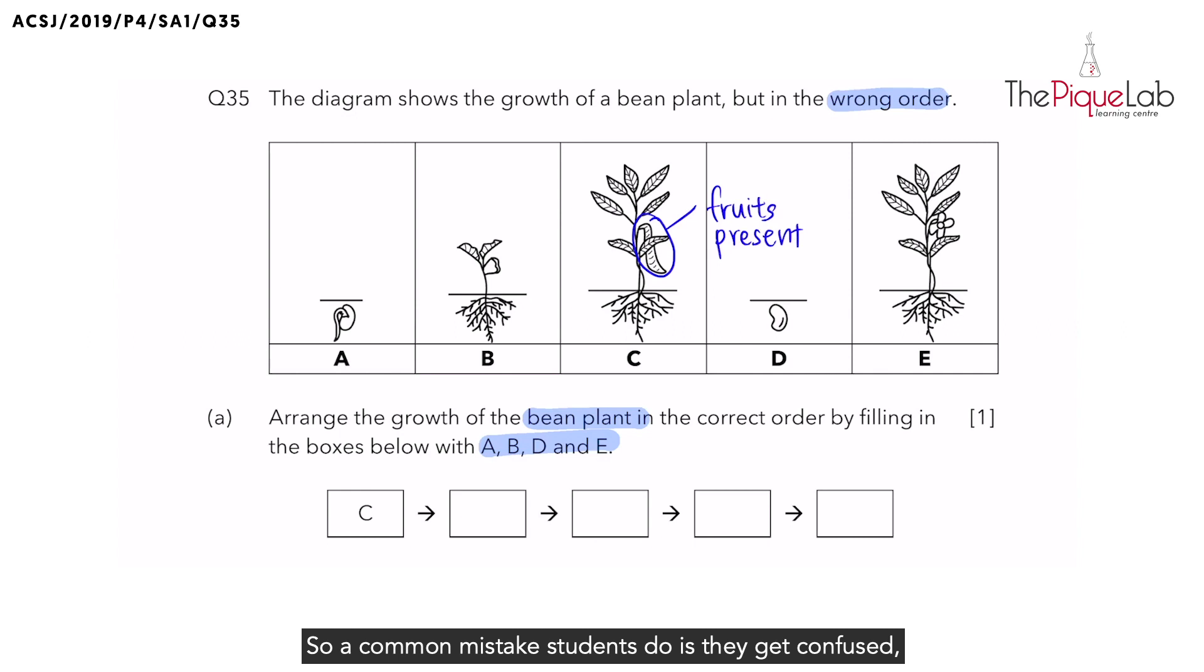So a common mistake students do is they get confused and then the answer they give is that they will actually write an answer that shows the plant growing in reverse. What do I mean? It means that they will tell me it will go to C and then it will go to E, and then it will go to B, A, and then D. So the plant is basically shrinking back to a seed.